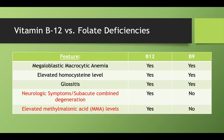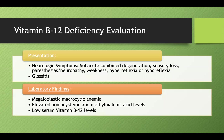Both B12 and folate deficiency cause megaloblastic macrocytic anemia, elevated homocysteine, and glossitis. The key difference is that B12 deficiency additionally causes neurologic symptoms and subacute combined degeneration, as well as elevated methylmalonic acid levels. These distinguishing features allow you to differentiate B12 from folate deficiency on exams.